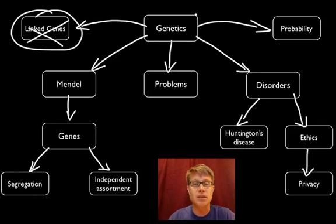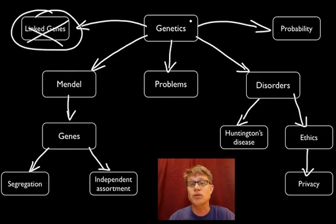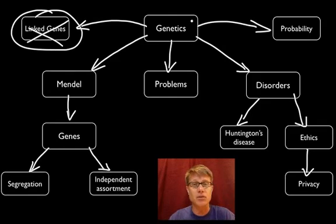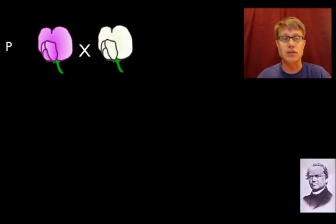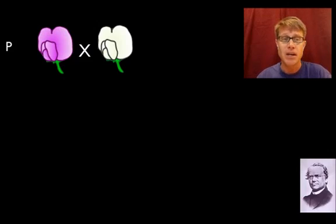Simple Mendelian genetics follows simple rules of math — rules of probability. If you understand those and how to do the first cross I show you, you should do well in most any of the crosses you get in genetics. And so this is what Mendel did: he crossed purple flowers with white flowers.